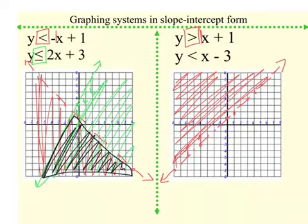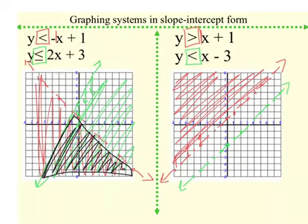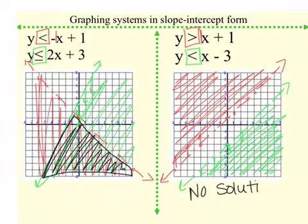I'm going to go ahead and graph the second equation. I'm going to start at negative 3, and this is a positive 1 as well, so up 1 over 1. Then I go the opposite direction. This tells me it's a less than symbol, so it's a dotted line, and less than tells me to shade below. Because these two shaded regions don't overlap, I don't have a solution for this one. Remember, my solutions are when I have both colors in the region, and since I don't have both red and green in a region, this is a no solution problem.